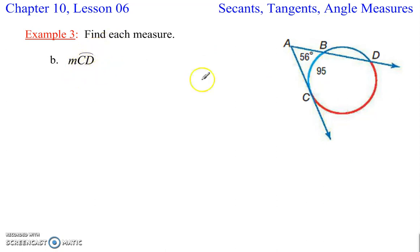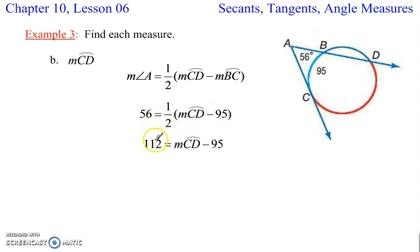Here we want to find the measure of the arc CD, and we know that this is 95. So we know that 56 is half the measure of these two subtracted from each other. So we can plug that in. 56 is half of CD minus 95. Multiply by 2 on each side. Times 2 gives me 112, and then we're going to add 95, and that gives us a measure of 207 units for CD.